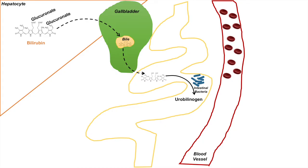Urobilinogen will then also be processed by other species of intestinal bacteria into stercobilin. Stercobilin is actually a pigmented chemical and will be excreted in your feces. Stercobilin is actually brown in coloration — that's why your feces are brown in coloration.